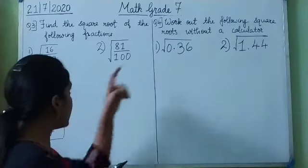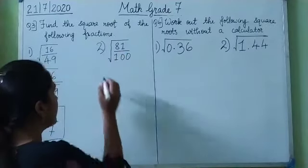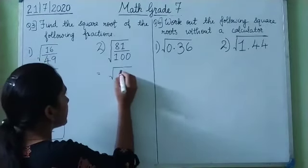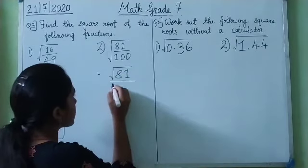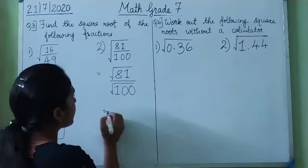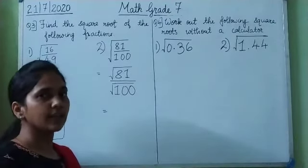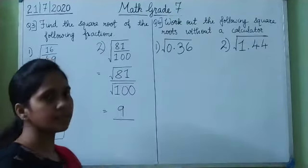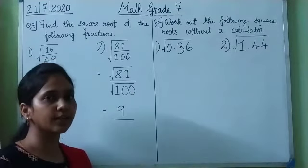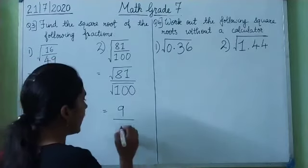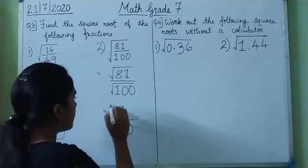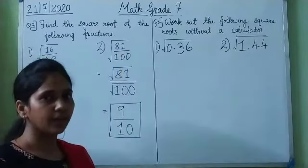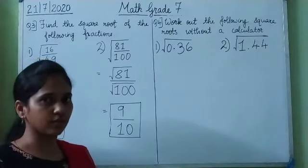The next is the square root of 81/100. Similarly, we split the square root sign: square root of 81 divided by square root of 100. The square root of 81 is 9, since 9 multiplied by 9 is 81. The square root of 100 is 10, since 10 into 10 is 100. So the square root of 81/100 is 9/10.